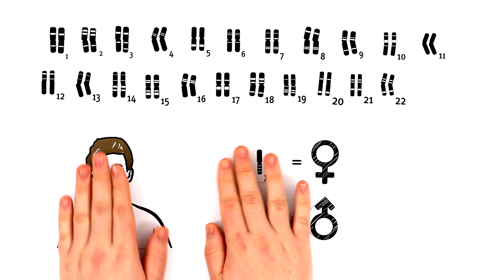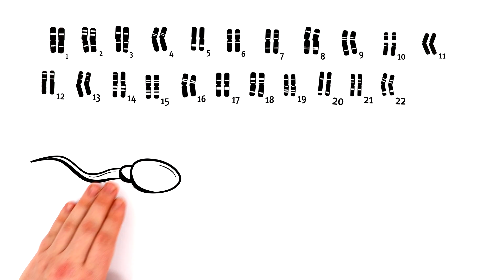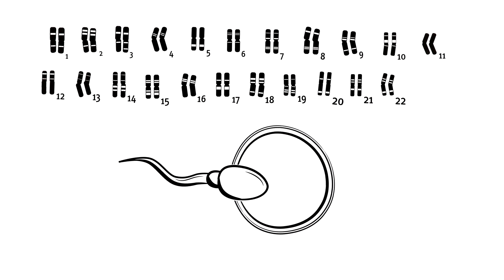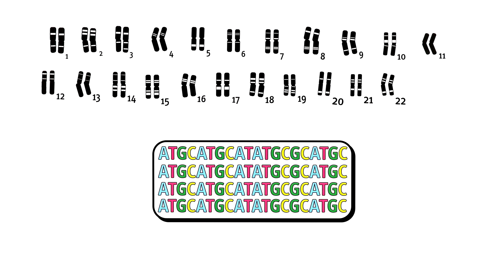The cells that are responsible for reproduction, sperms and egg cells, only have half of the total chromosomes. During fertilization, these chromosomes get combined and create the genetic code for the child.